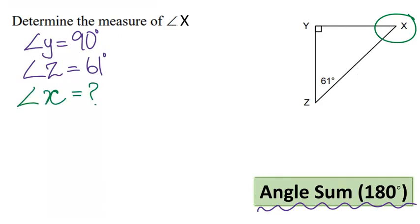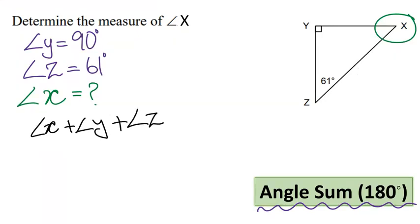Let's write down our angle sum theorem, which states that the sum of all angles is 180 degrees. So angle x plus angle y plus angle z equals 180 degrees. Let's plug in the numbers and solve for angle x.